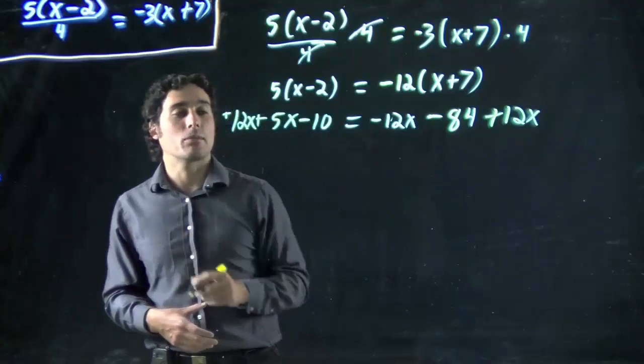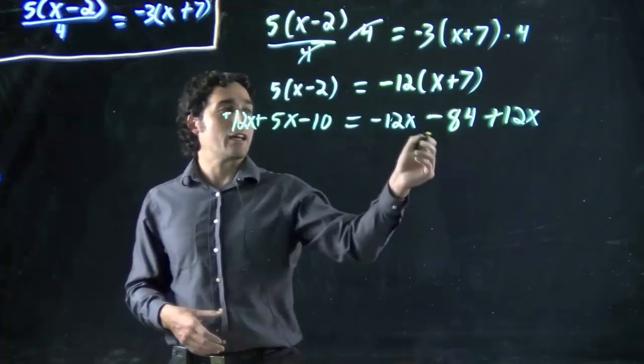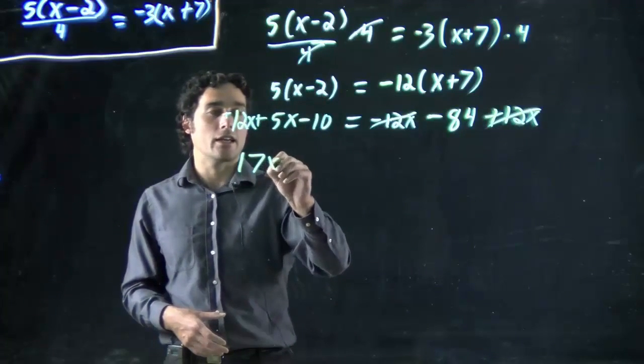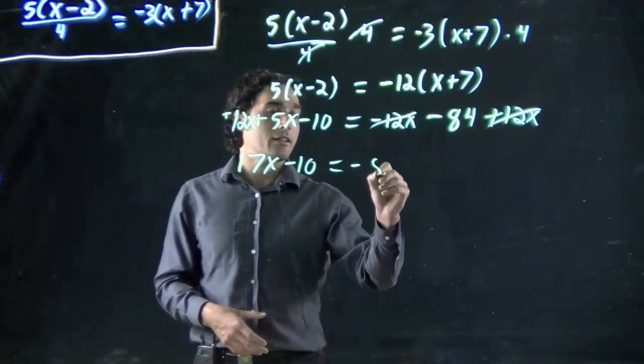So you see I'm doing a plus 12x over here. Great. Well, that cancels on this side. And what's 12x plus 5x? That's 17x. So, I've got my minus 10 here. It's equal to still minus 84.